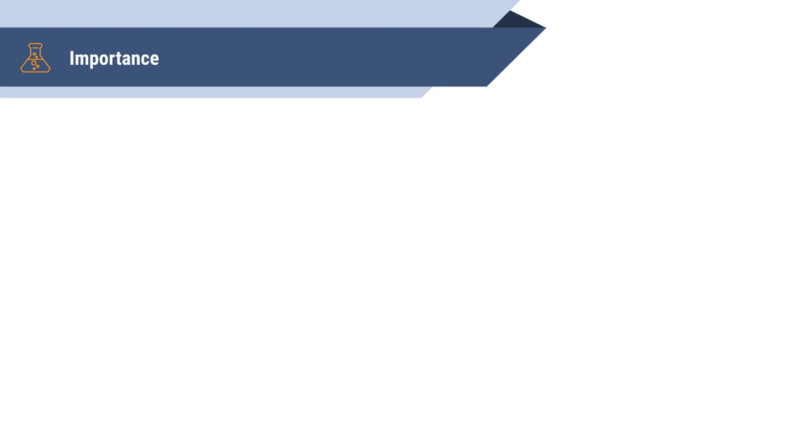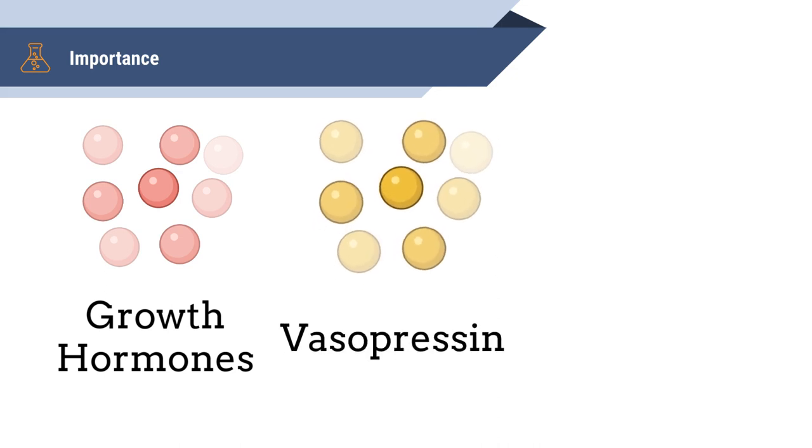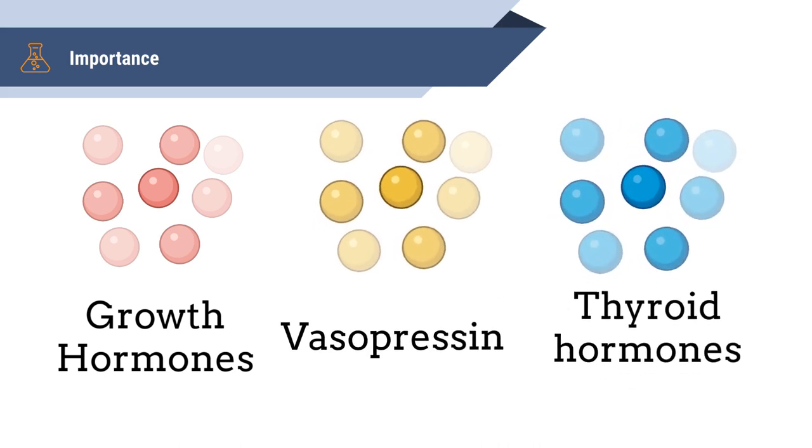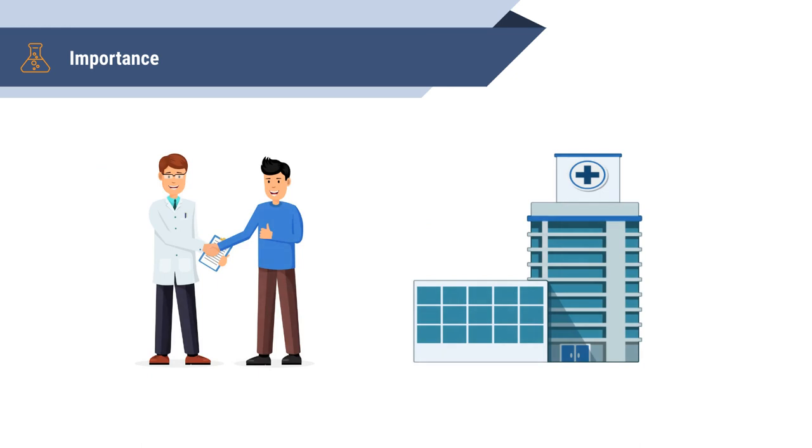This was just one example of an endocrine process, but there are many more, such as growth hormones, vasopressin, thyroid hormones, and the list goes on. Each of these hormones have their own end goals but all use the same method of transportation. The endocrine system is crucial for the body. Understanding the mechanisms of how these signaling pathways work helps us to create new therapies in treating disease.